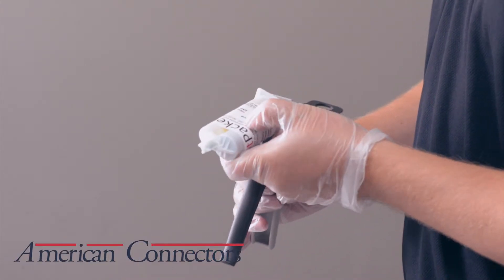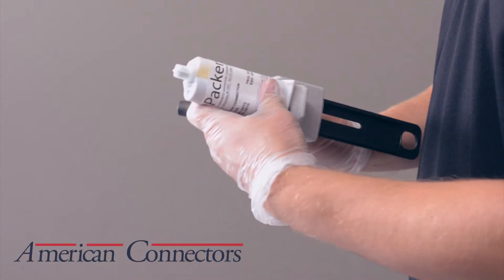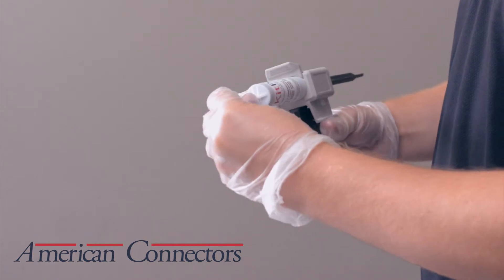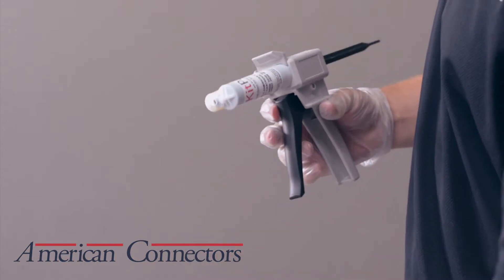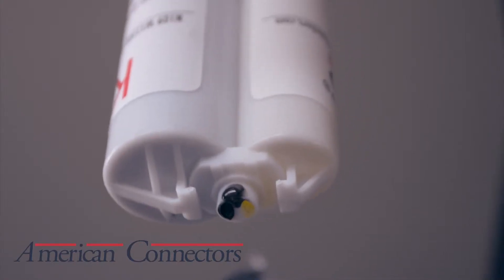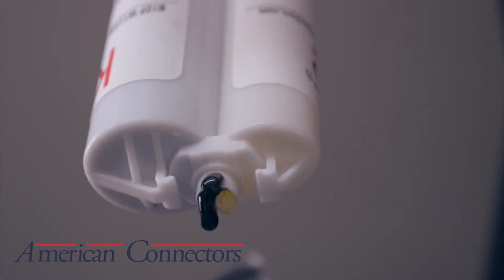Attach the cartridge. It can go in only one way. Remove the cap and make sure the resin and the hardener are both flowing. You will see both sides flowing evenly.